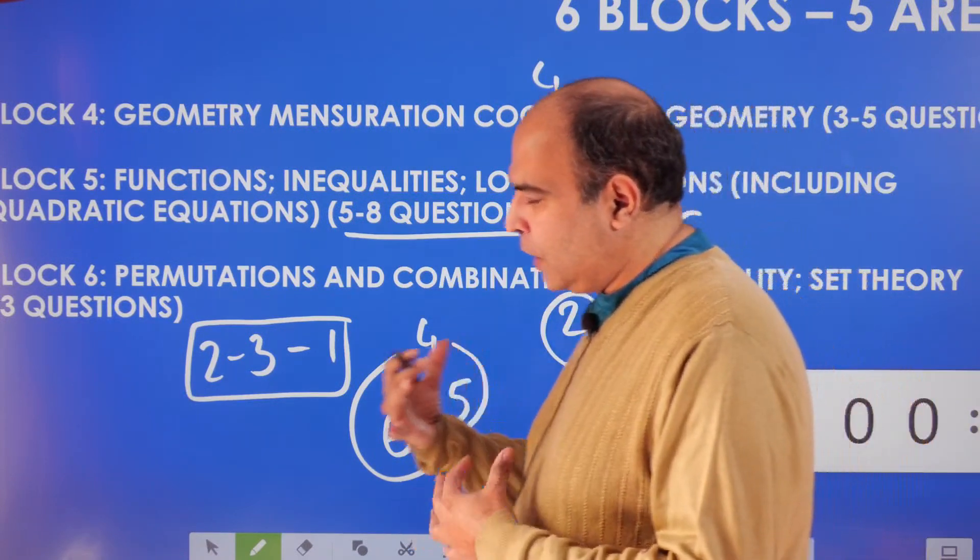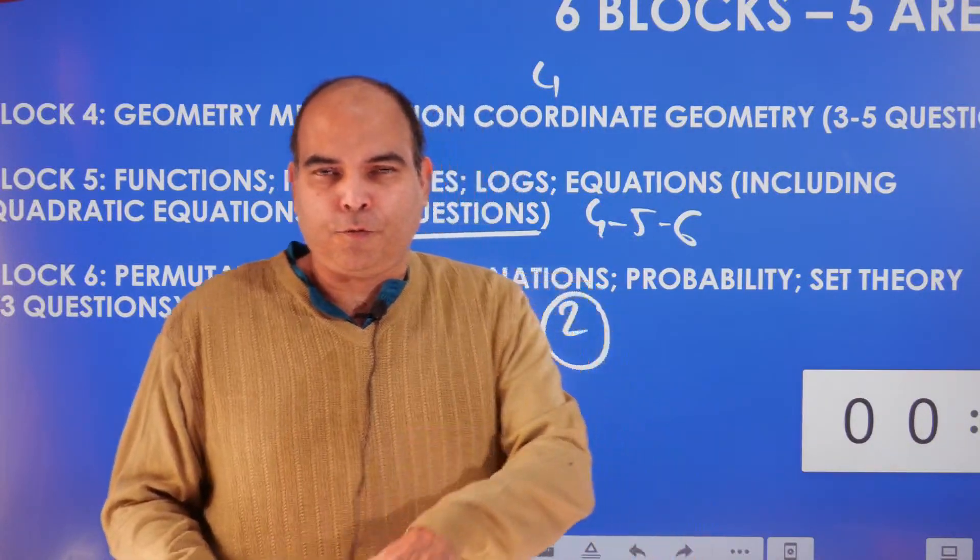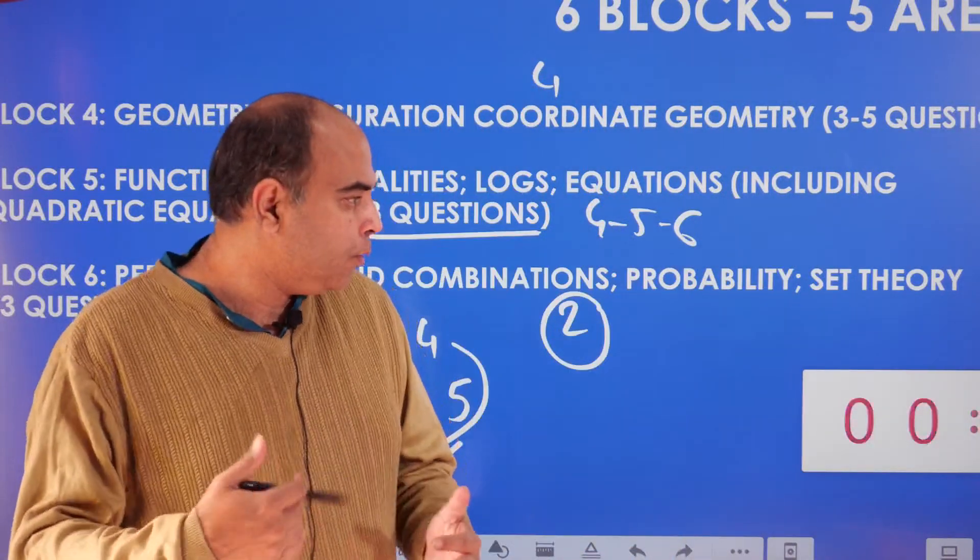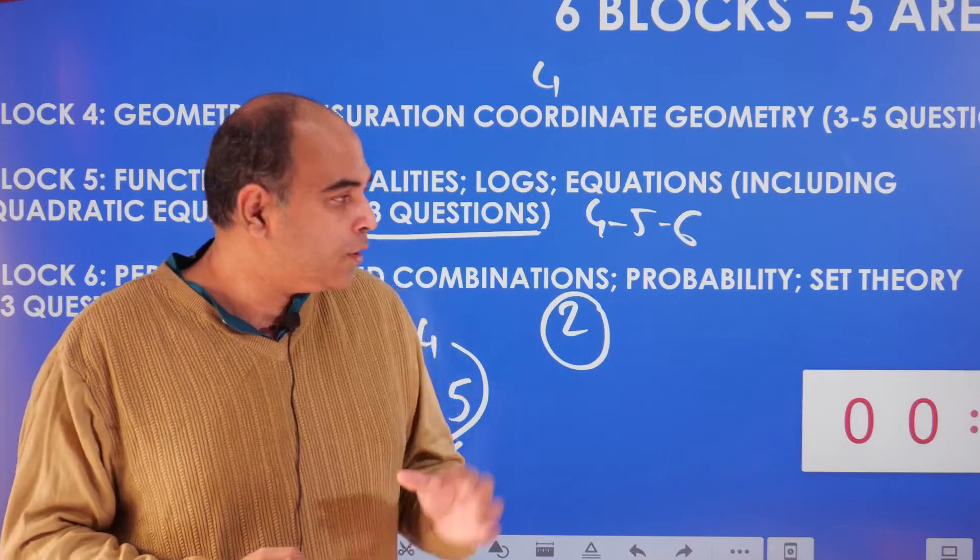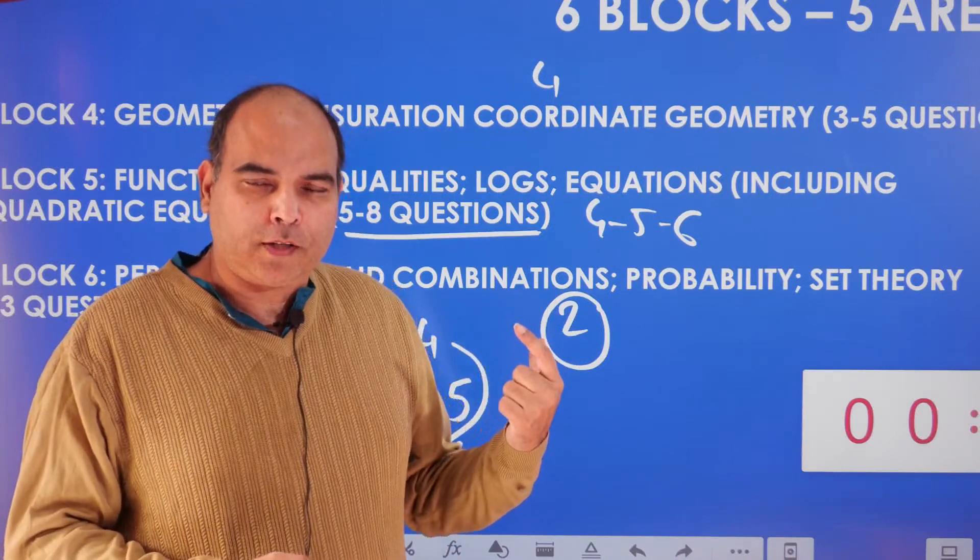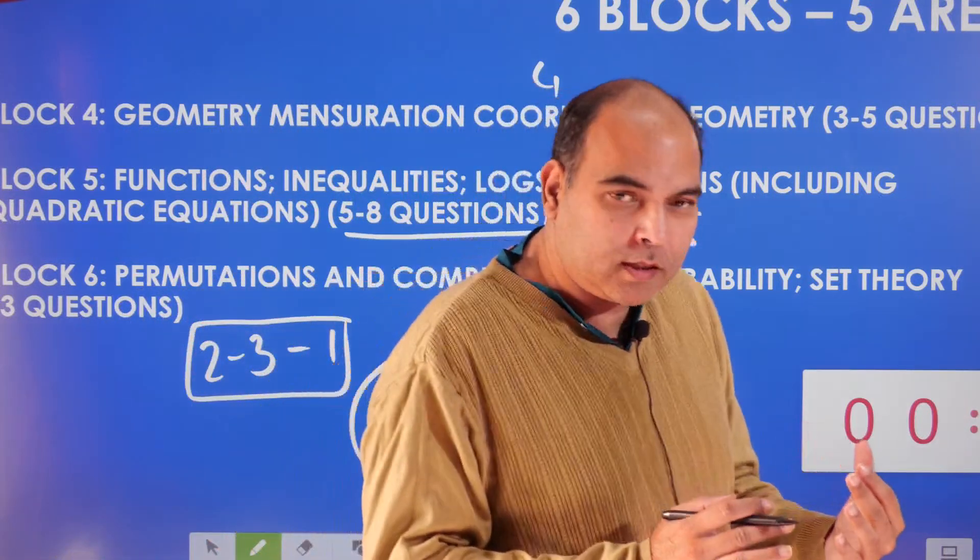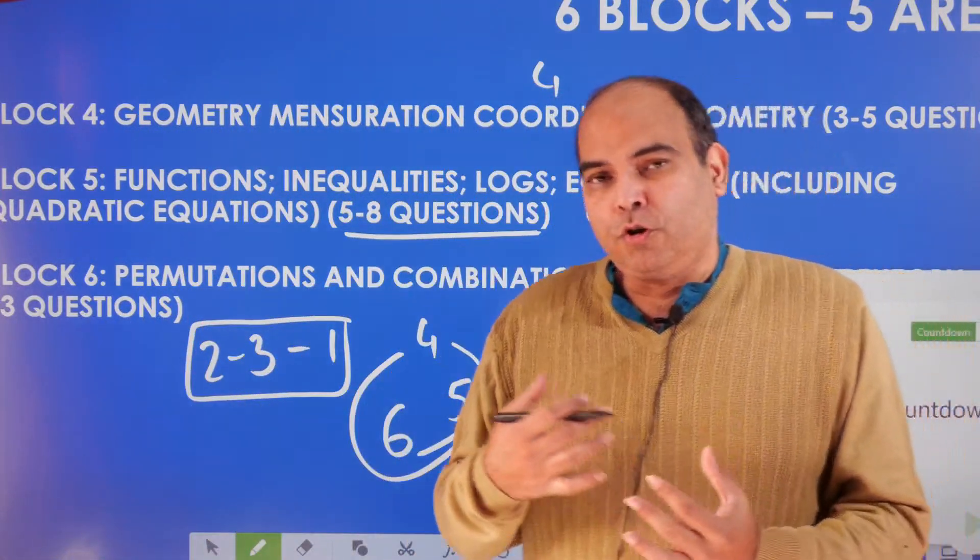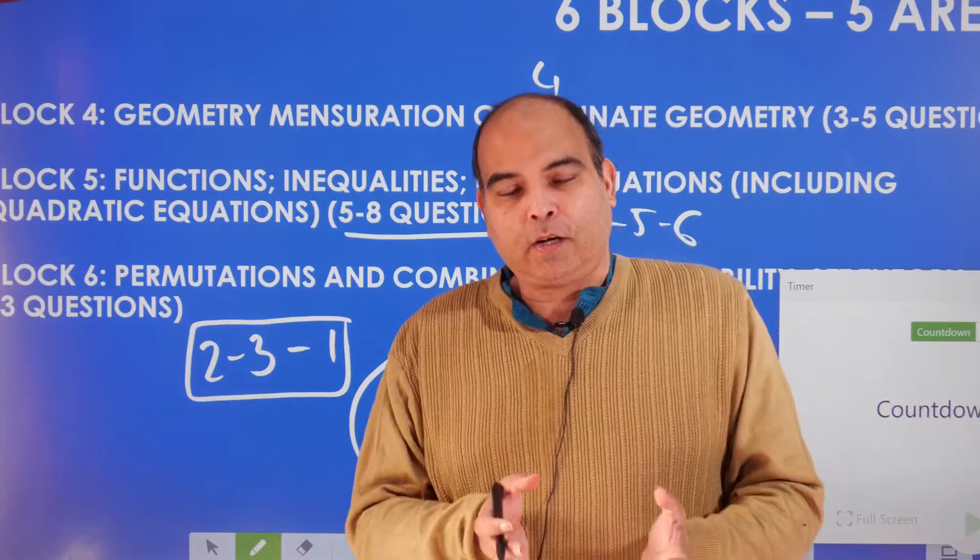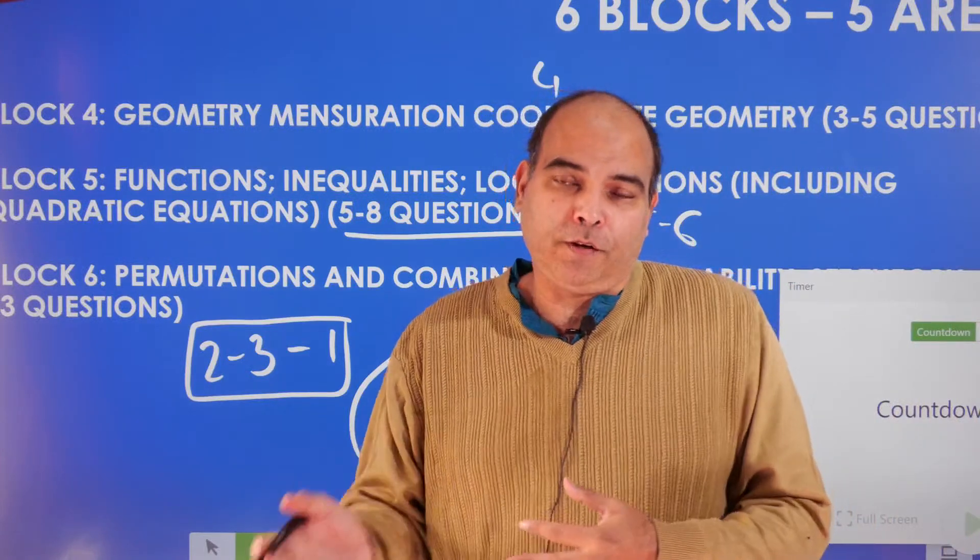If you want, you can take 6 in between—do 5, then 6, then 4—so that your chapter count keeps going. This is the syllabus and the importance of each area. Now, how do you do these chapters? What should you keep in mind when you're doing round one, and then what does round two, round three, round four mean? That's something I'll cover in my next videos.